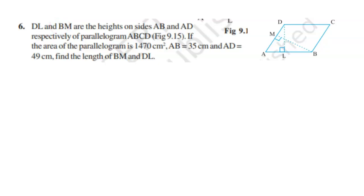Hello to everyone, welcome back to my channel. Today's question is: DL and BM are the heights on sides AB and AD respectively of parallelogram ABCD. If the area of the parallelogram is 1470 cm², AB is 35 cm, and AD is 49 cm, find the length of BM and DL.